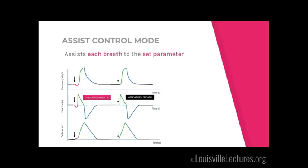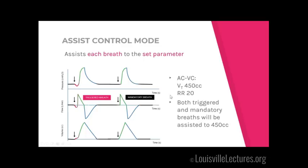Assist control is where each breath sensed by the machine — whether triggered or mandatory — is fully assisted. For example, if you set a patient on AC volume control at 450 cc and they try to suck in air through the ET tube, the machine senses that and gives a breath of 450 cc. If they forget to breathe, the machine gives another breath — also assisted to 450 cc. This is different from SIMV.